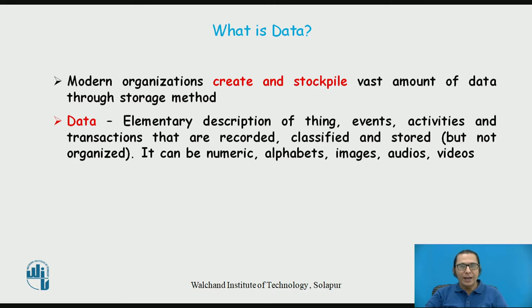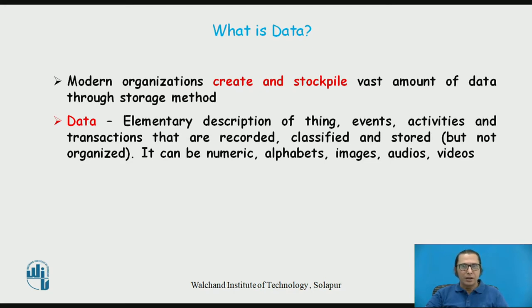But what is data? We have a very simple definition: data is an elementary description of a thing, event, activities, and transactions that are recorded, classified, and stored. But usually raw data is not stored in an organized way. For example, when I go to a bank and open a saving bank account, the bank asks for data like my name, address, PAN number, Aadhaar number, and photograph — all this is data describing myself.